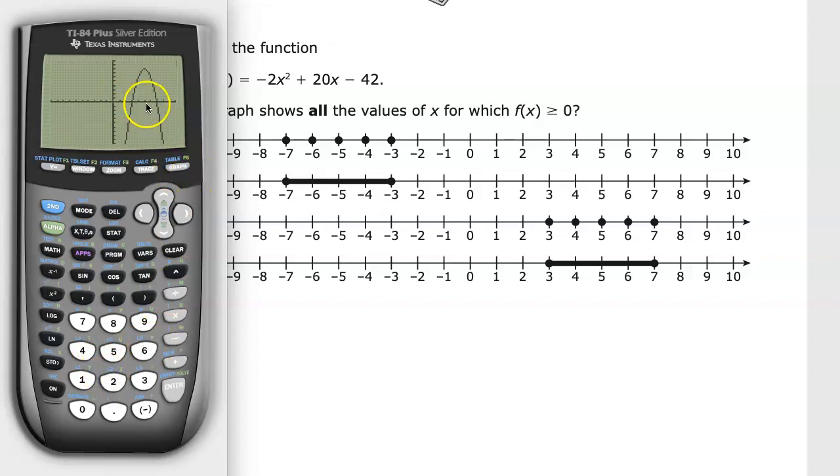I can see that at this point and this point, I get values that are greater than or equal to 0, anywhere between here and here. I can count on the graph: 1, 2, 3, 4, 5, 6, 7. So anywhere between 3 and 7 is greater than or equal to 0. That's what I'm looking for.